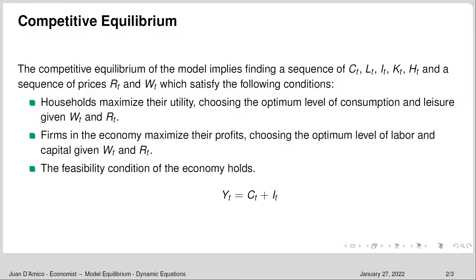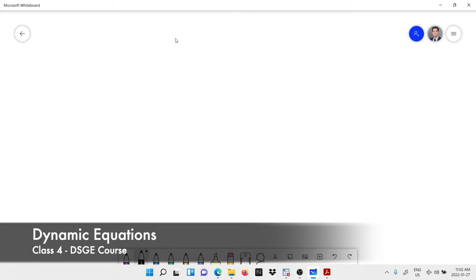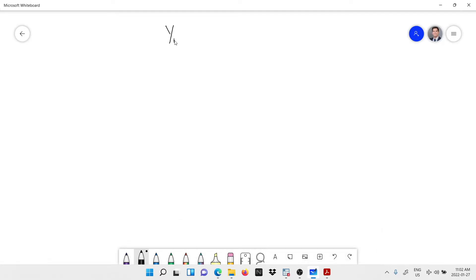Firms in the economy maximize their profits by choosing the optimum level of labor and capital to demand given wages and returns. After a shock, new wages and returns arise and firms must optimally decide how to maximize profits. The feasibility condition of the economy also holds: total output equals consumption goods plus investments. Now let's go to the board and write all the dynamic equations. The first equation is output: Y equals consumption plus investment.